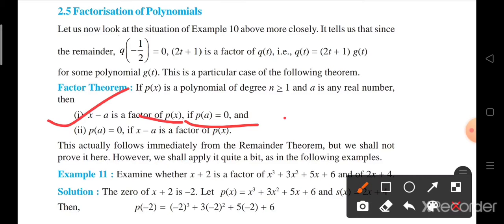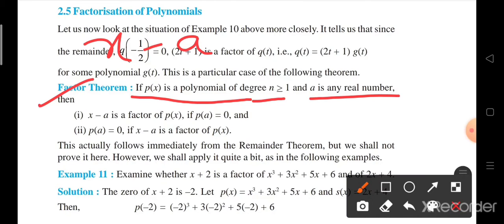p at a means p, polynomial p(x) at x is equal to a is equal to 0. Factor Theorem is: the polynomial p(x) of degree n greater than or equal to 1, and a is any real number,